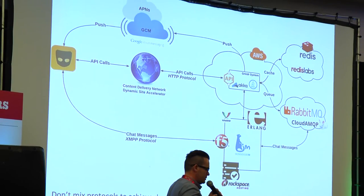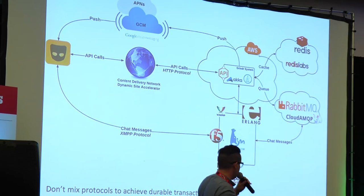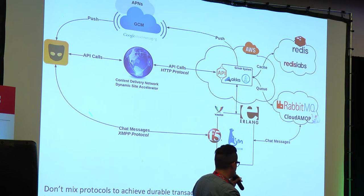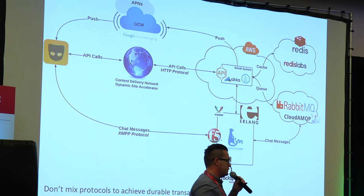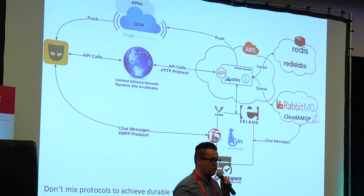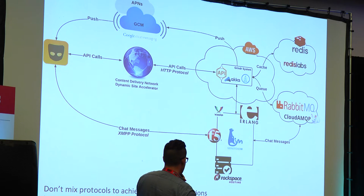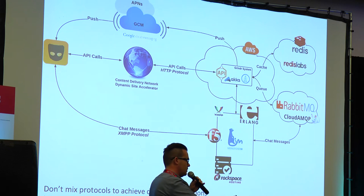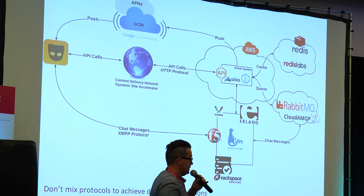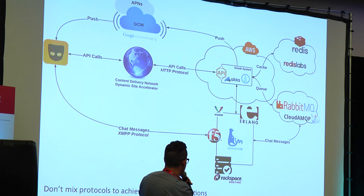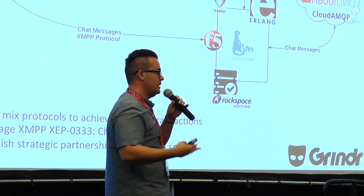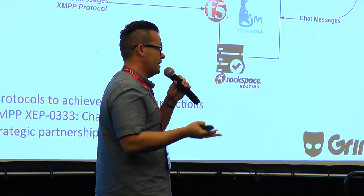XMPP has a lot of rich extensions that can aid development of a robust chat framework. One of them is XEP-0333, which are chat markers — markers that allow you to say something was delivered to the server, then delivered to the mobile device, then actually opened. The problem is that none of that stuff is available through open-source libraries. You have to make an investment and build it yourself, both on the server side and the client side.